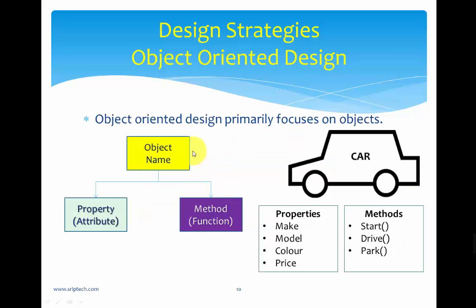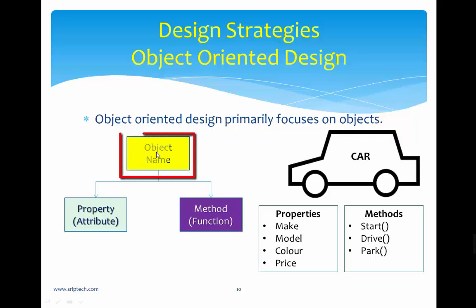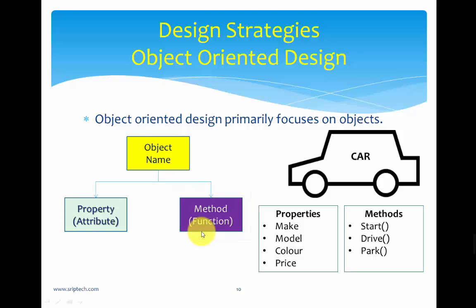Opposite to functional view, we have object-oriented design as another strategy. Object-oriented design primarily focuses on objects. Objects are real-time entities — they can be physical things you can see, or conceptual entities you cannot physically see but can implement in a program. For example, 'time' is a conceptual entity, whereas a student, a car, or a table are real-time entities. Every object has a name, properties, and methods — and possibly events as well.